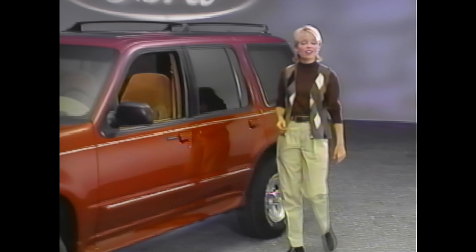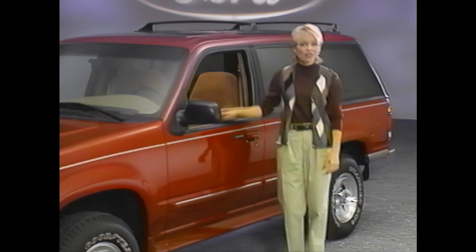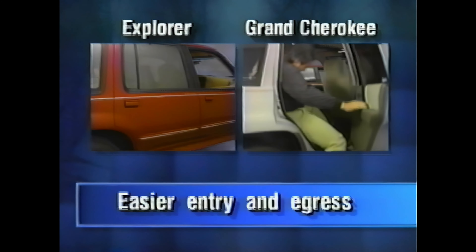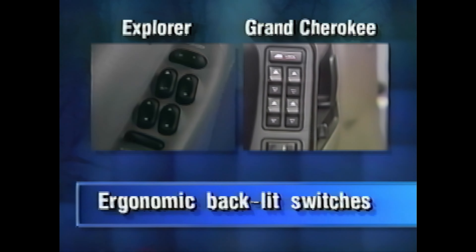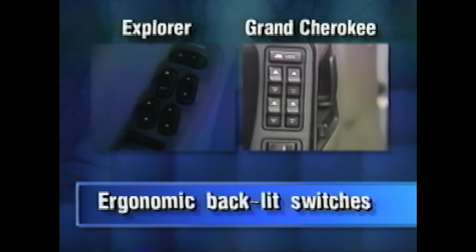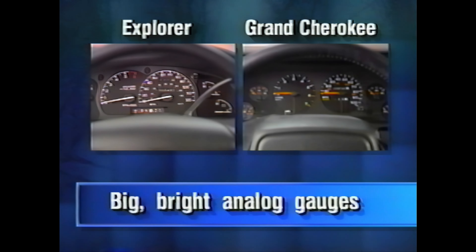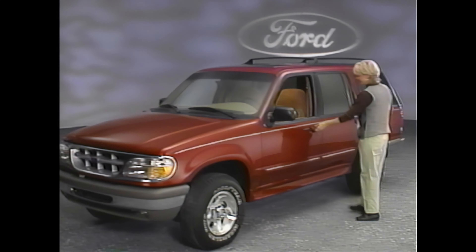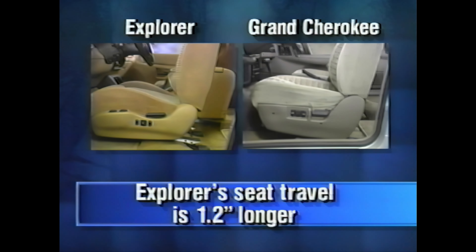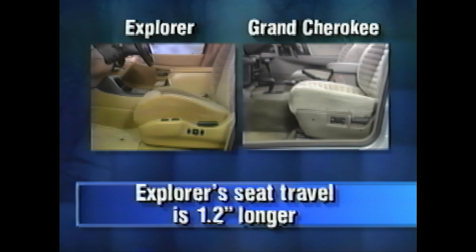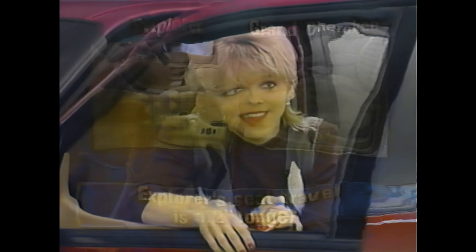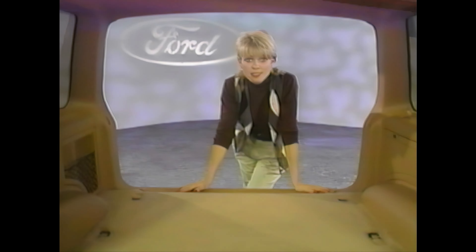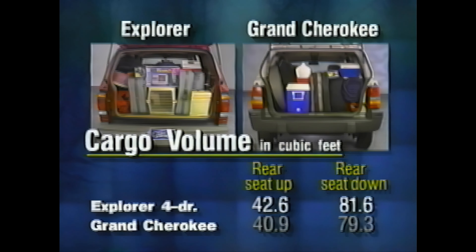Now let's move inside the vehicle for a look at comfort and convenience. First, Explorer gets the nod for ease of entry and egress in the front and especially in the rear. Second, Explorer provides outstanding ergonomic backlit switches, big bright analog gauges, and climate and audio system controls you can operate while wearing gloves. In the front, Explorer provides increased forward seat travel for shorter drivers and more legroom than Grand Cherokee with the seat moved all the way back, without asking backseat passengers to sacrifice comfort. Rear seat up or down, Explorer has more room than Grand Cherokee.